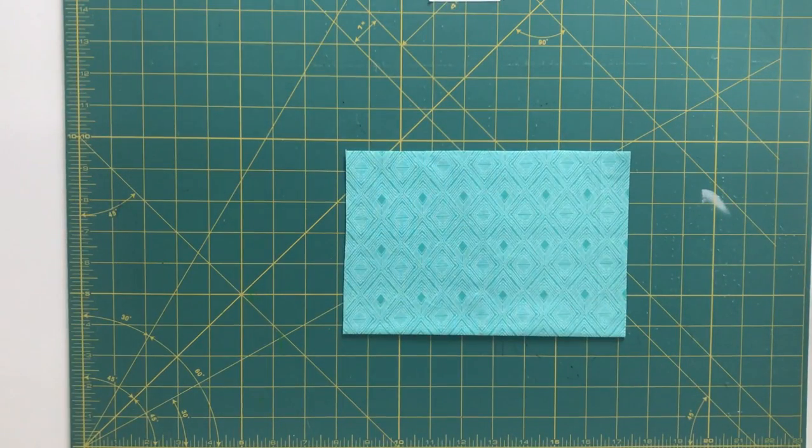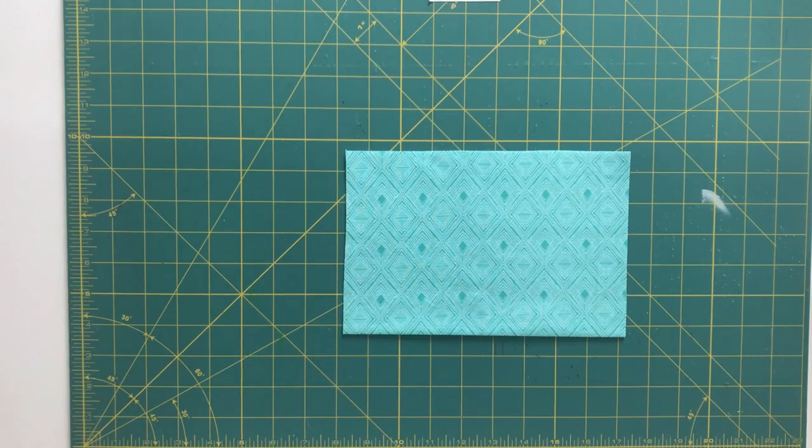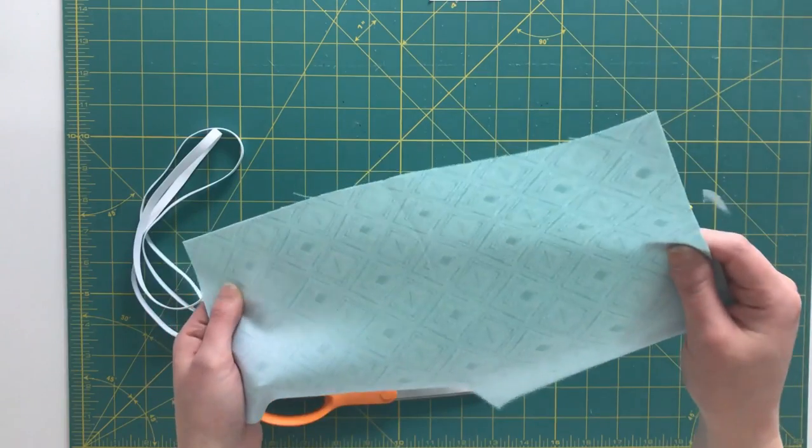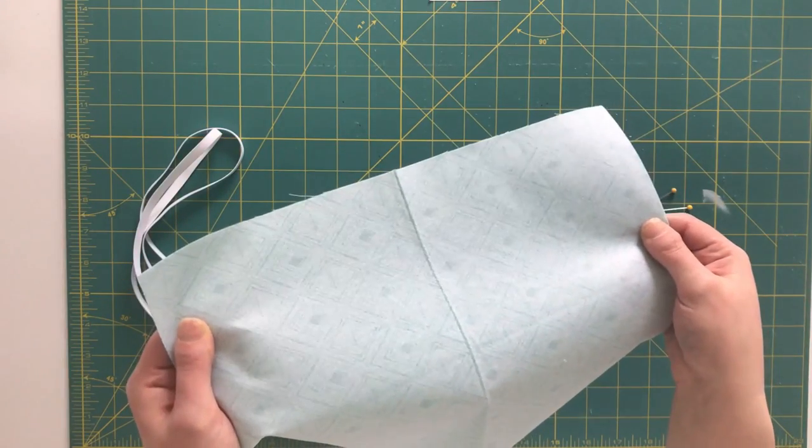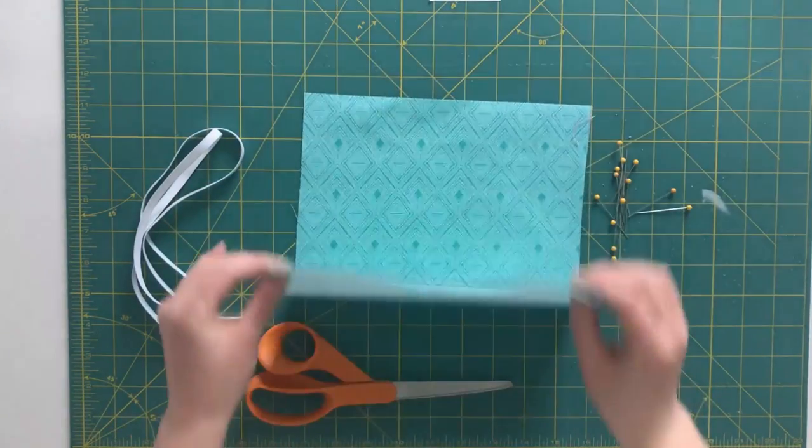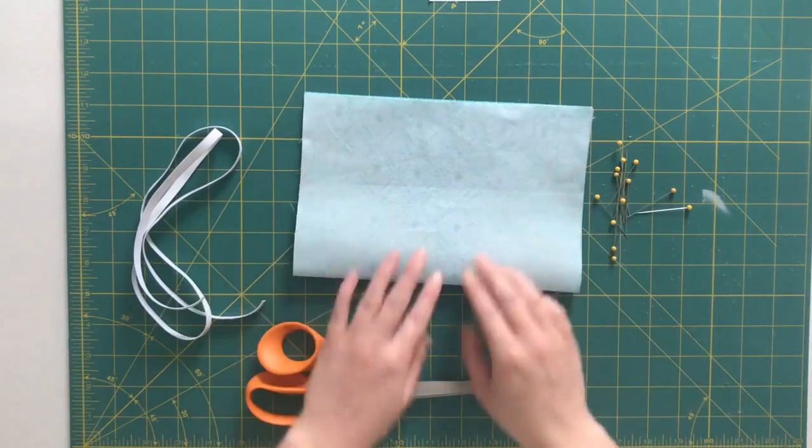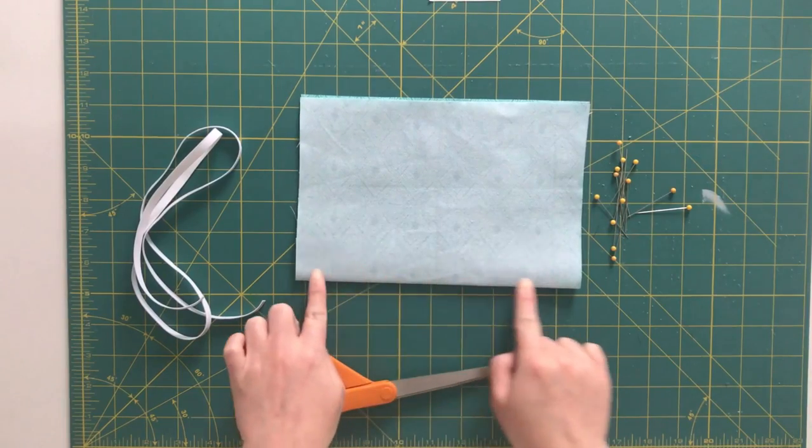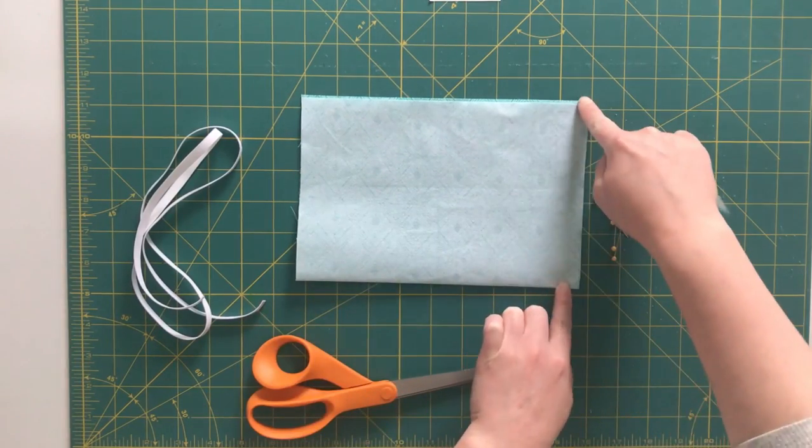I'll also need to cut out the same piece out of my interfacing. So now I have my interfacing applied to the wrong side of my cotton fabric, and I've folded it right sides together in half this way so that I have a nine inch edge here and six inch edge here.